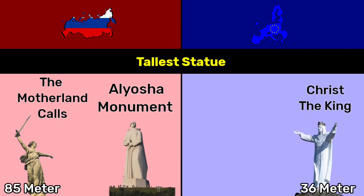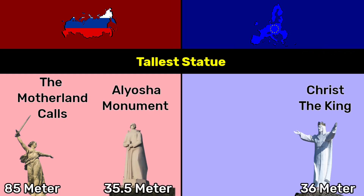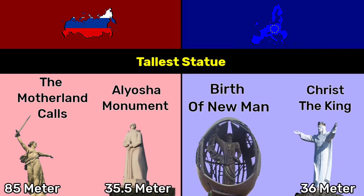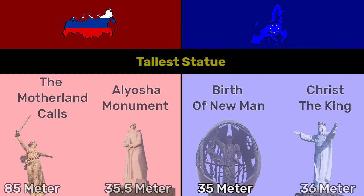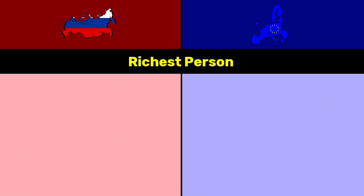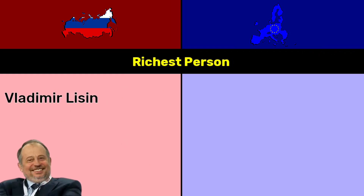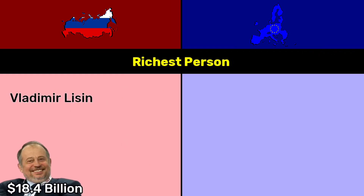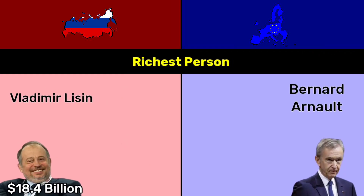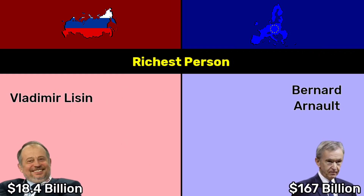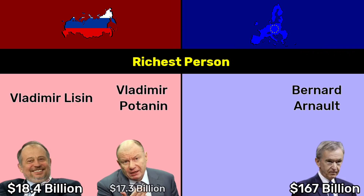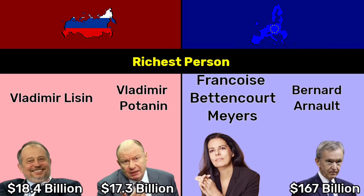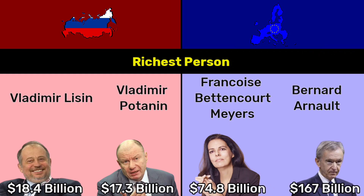Tallest statue: Russia — The Motherland Calls at 85 meters and Alyosha Monument at 35.5 meters; EU — Christ the King at 36 meters and Birth of the New Man at 35 meters. Richest person: Russia — Vladimir Lisin at 18.4 billion dollars and Vladimir Potanin at 17.3 billion dollars; EU — Bernard Arnault at 167 billion dollars and Françoise Bettencourt Meyers at 74.8 billion dollars.